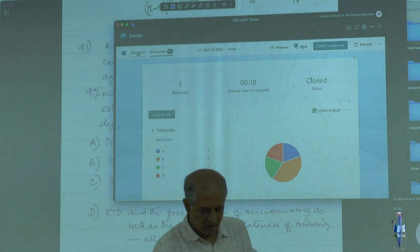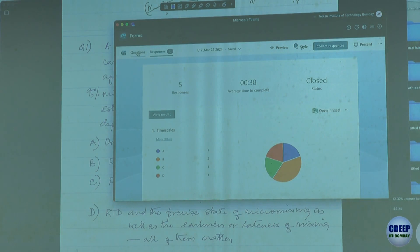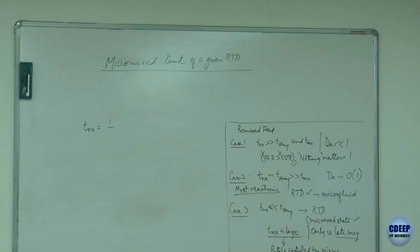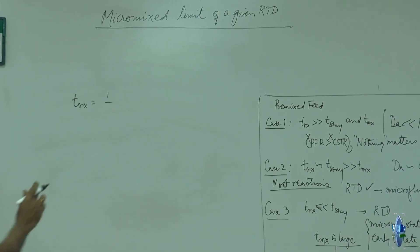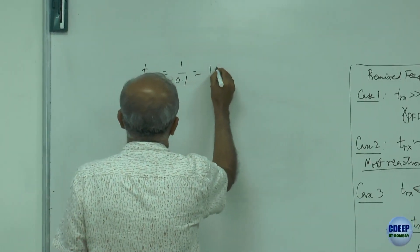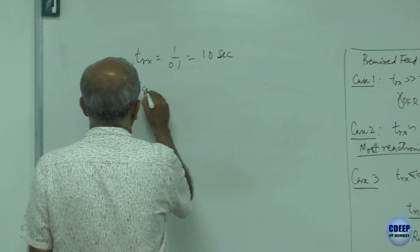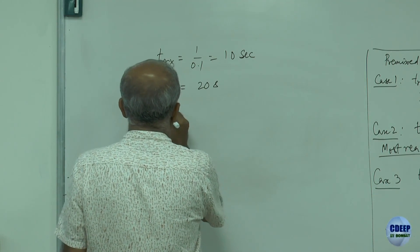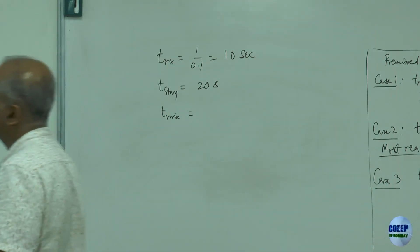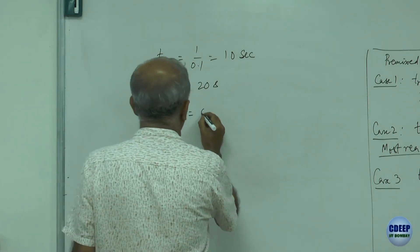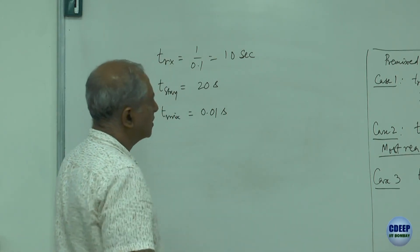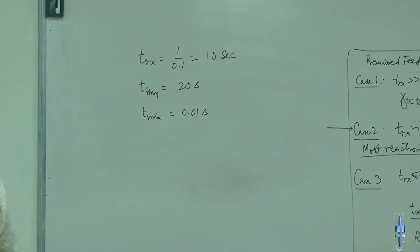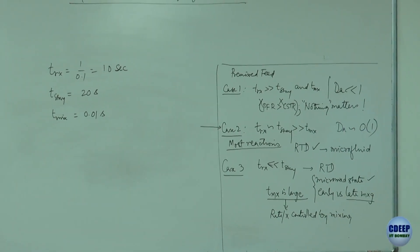In our case, the reaction time is 1 over 0.1, which is 10 seconds. The holding time tau is 20 seconds. The mixing time is 0.01 seconds. So T_reaction is comparable to T_stay, and T_stay is much greater than T_mixing — this corresponds to Case 2. RTD is important, and you can make a microfluid assumption. So B is the correct choice.